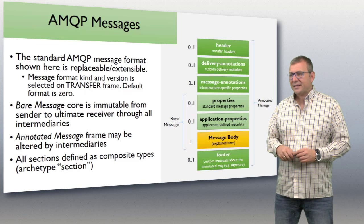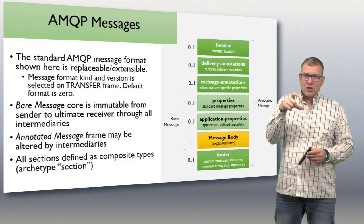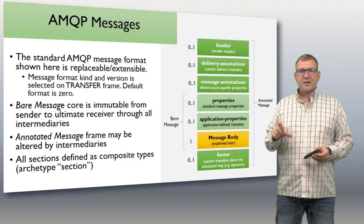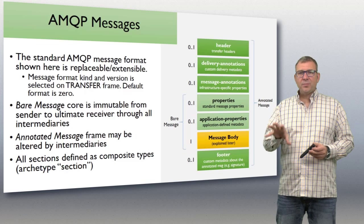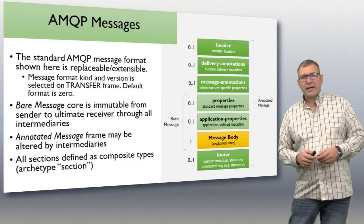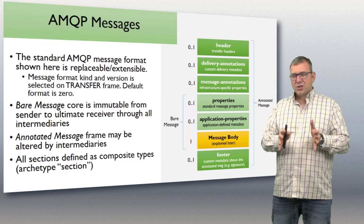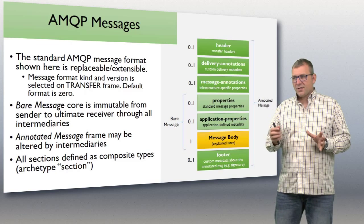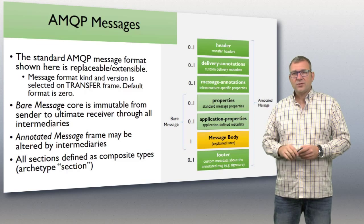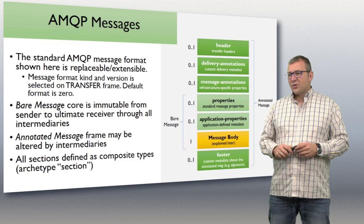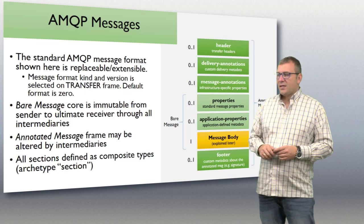The standard message format is defined in AMQP but can be replaced if needed. The bare message is the core — it contains the standard message properties, application properties, and the message body. That bare message may not be altered or changed by any party in an AMQP network; the intermediary sitting between sender and receiver may not touch or change it in any way. The annotation sections, however, are something that infrastructure can touch and manipulate — for instance, tracking the number of deliveries for a particular message.